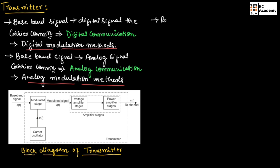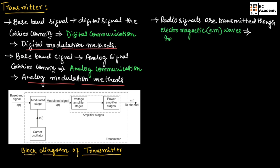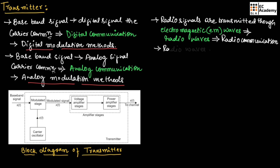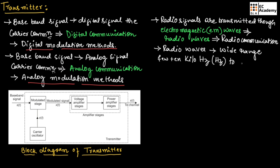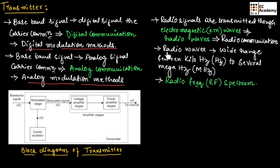In radio communication, radio signals are transmitted through electromagnetic waves, also referred to as EM waves or radio waves. These radio waves have a wide range of frequencies, starting from a few tens of kilohertz to several megahertz. This wide range of frequencies is known as the radio frequency spectrum, or RF spectrum.